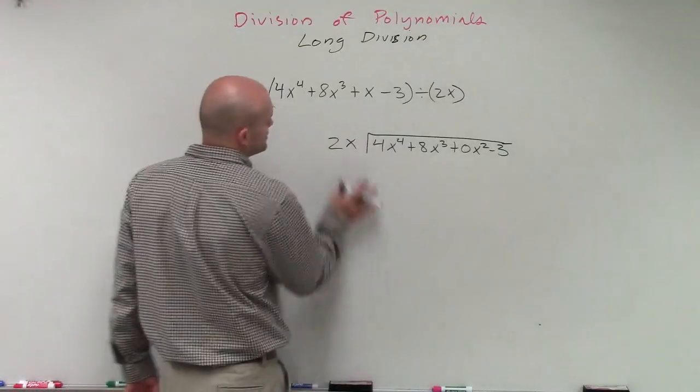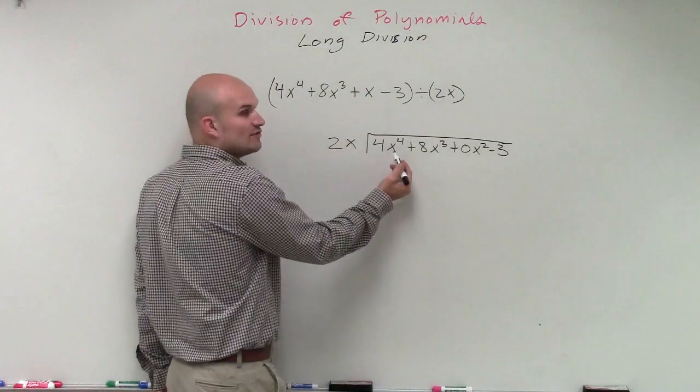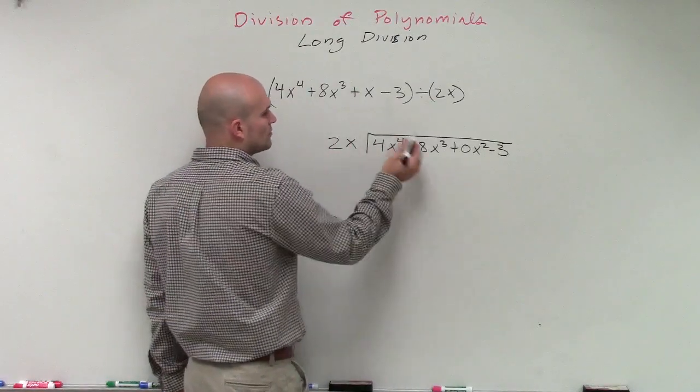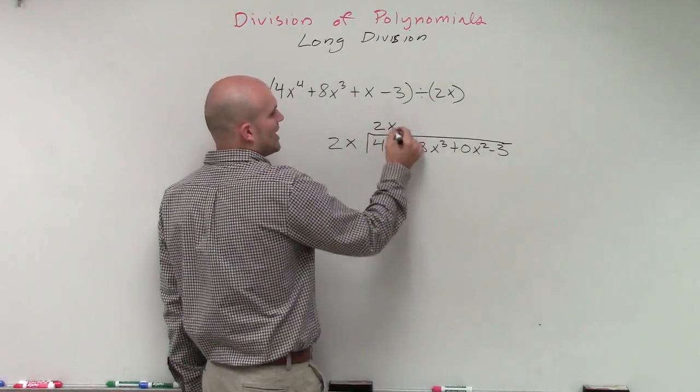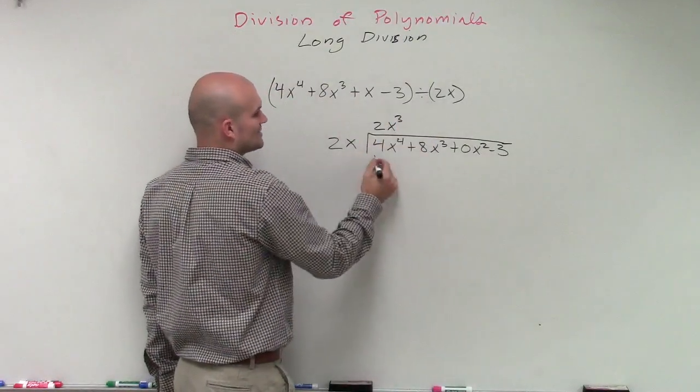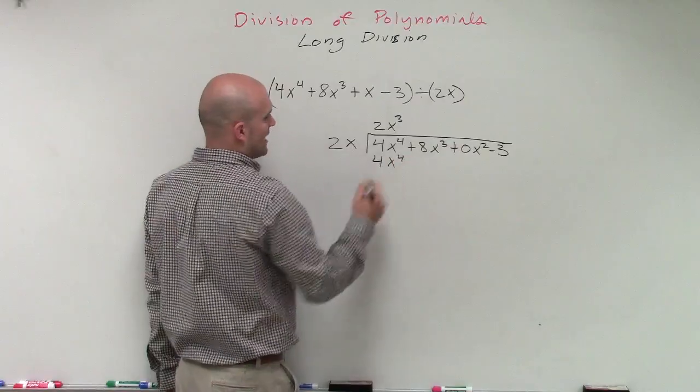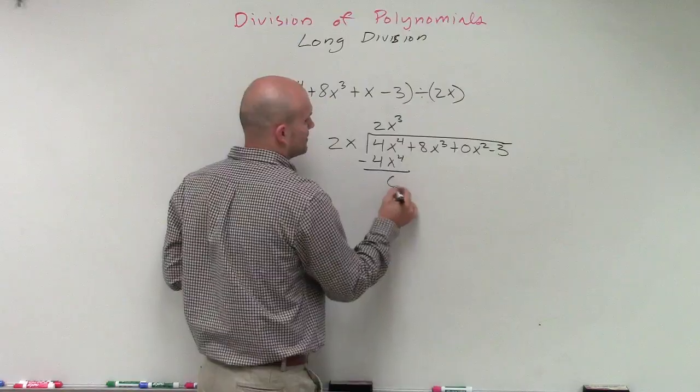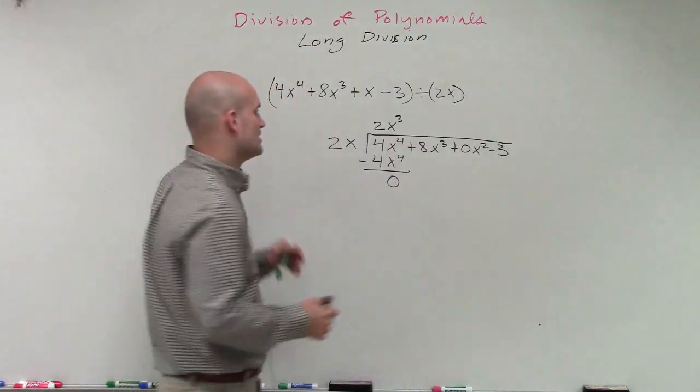So remember, the first thing we're going to do is take our first term on our divisor and divide it into the first term of our dividend. So 2x divides into 4x to the fourth 2x cubed times. Then we multiply these. 2x cubed times 2x is going to leave us with 4x to the fourth. And of course, we want that because we want to subtract this out to 0.